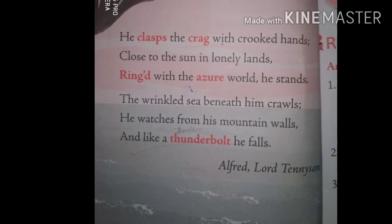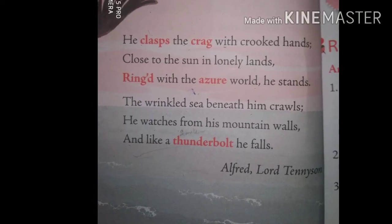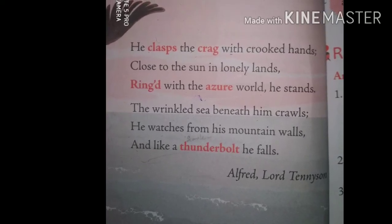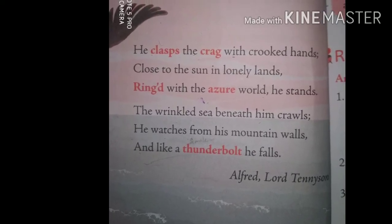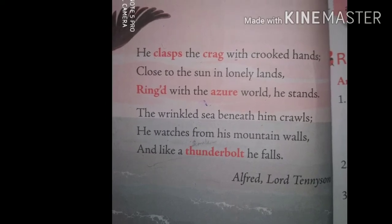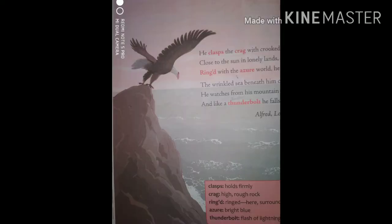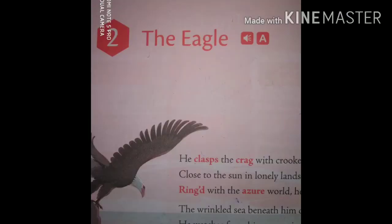We know the nature of an eagle. If he sees any prey, he may get down very fast. Here, that fast movement is compared to a thunderbolt. Thunderbolt means a flash of lightning and thunder. Here, lonely lands refers to the high rocks and mountain walls where the eagle stands. They are lonely because only a few creatures live there.